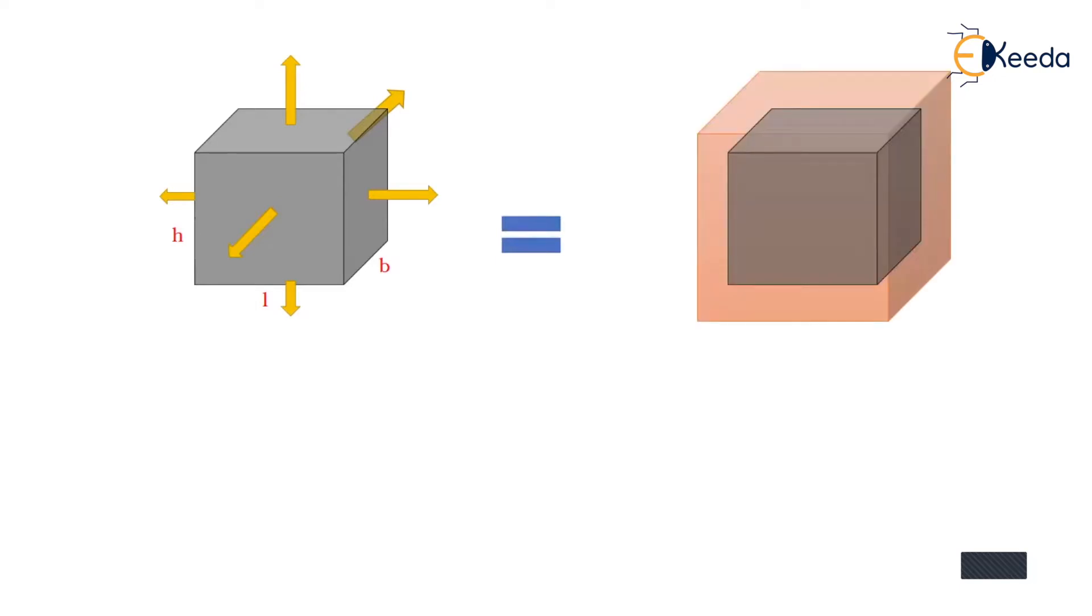Let us consider this rectangular cube having h as height, l as length and b as breadth. As shown in figure, this cube is subjected to tensile forces along all three axes, the effect of which there will be increase in length, height and breadth of this cube.